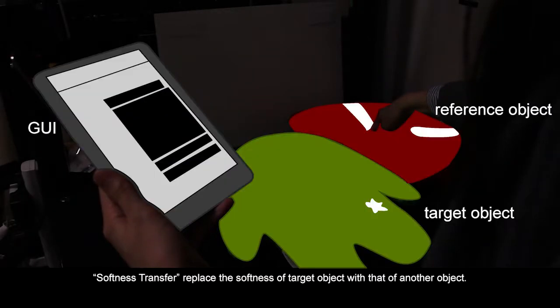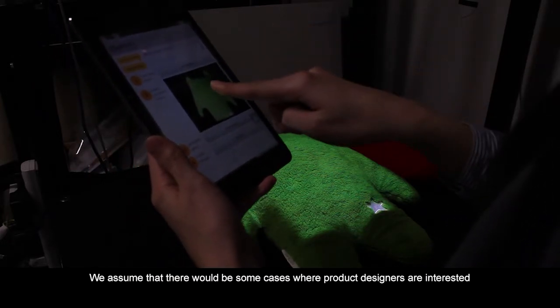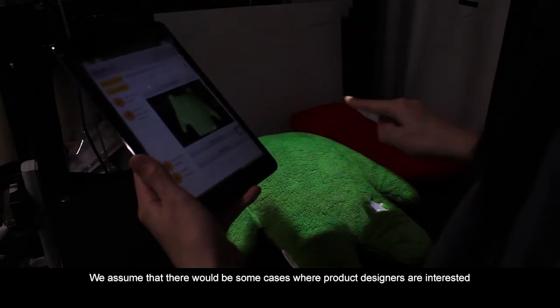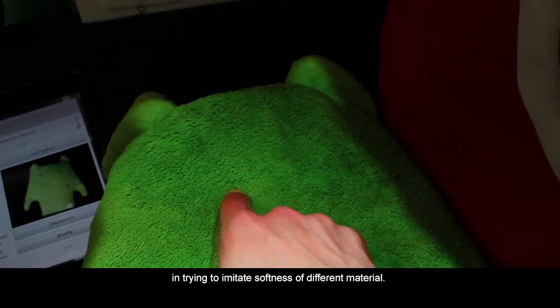Softness Transfer replaces the softness of the target object with that of another object. We assume there would be some cases where product designers are interested in trying to imitate the softness of different materials.